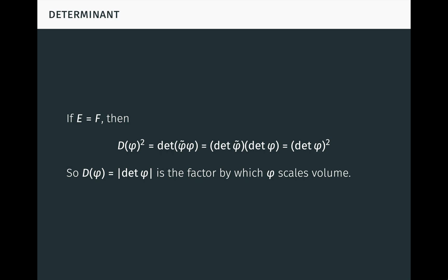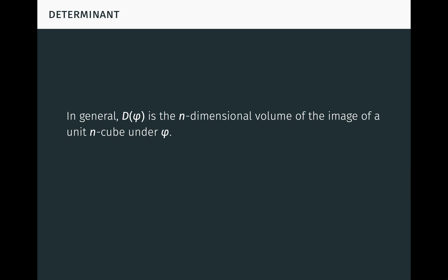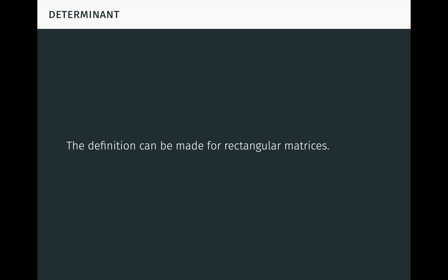Notice d doesn't capture the sign of the determinant, so it doesn't tell us whether phi preserves or reverses orientation — that's the price we pay for greater generality. In general, when E is not necessarily equal to F, or even of the same dimension as F, d of phi is the n-dimensional volume of the image of a unit n-cube under phi. It follows that d of phi is non-zero if and only if phi is injective. In particular, d of phi is zero if m is less than n, which makes sense, since it's impossible to fit a volume of a given dimension into a space of lower dimension. So we see how d behaves in some important ways like a determinant. In the language of matrices, this provides a definition of something like a determinant for rectangular matrices. It turns out that all of this is closely related to the singular value decomposition, which is an extremely important topic in its own right.